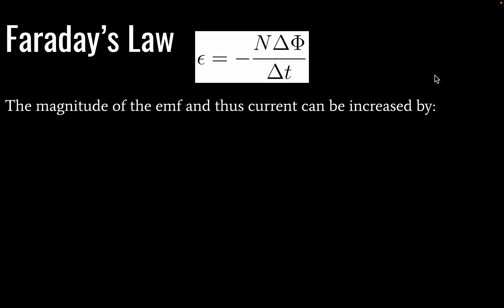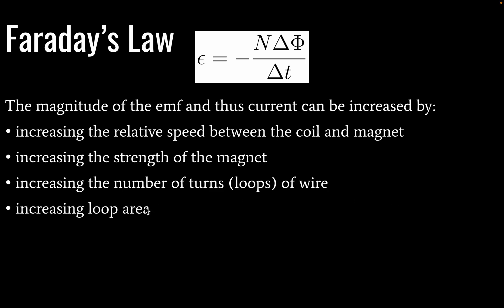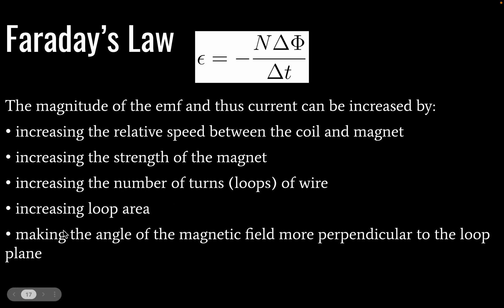So the magnitude of our EMF and current can be increased by increasing the relative speed between the coil and the magnet, increasing the strength of the magnet, increasing the number of turns or loops of wire. There's our N. Increasing the loop area. Remember, this is equal to area of the coil times our magnetic field strength. So if we increase loop area and our magnetic field is constant, then we will get an increased EMF.